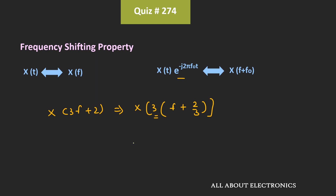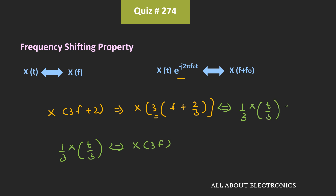So here, we have already seen that for X(3f), the inverse Fourier transform is equal to (1/3)·x(t/3). But with this scaling factor, if the frequency is shifted by 2/3, then its inverse Fourier transform will be equal to (1/3)·x(t/3). That means, here instead of f₀, there is 2/3. So the inverse Fourier transform of X(3f+2) is equal to (1/3)·x(t/3) times e to the power minus j·(4π/3)·t.